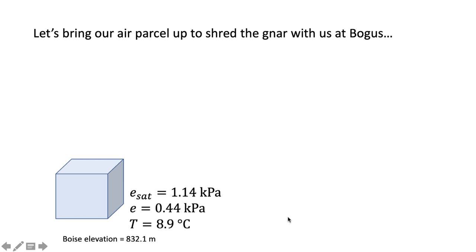Here's our setup. We are starting down in Boise with those meteorological conditions. We're going to enclose — think of it as a meter cube in clear Lexan — and take it along with us up to go skiing at Bogus. To review: the saturation vapor pressure down in Boise was 1.14 kilopascals, the actual vapor pressure was 0.44 kilopascals, the air temperature was 8.9 degrees Celsius, and the elevation in Boise is 832.1 meters.